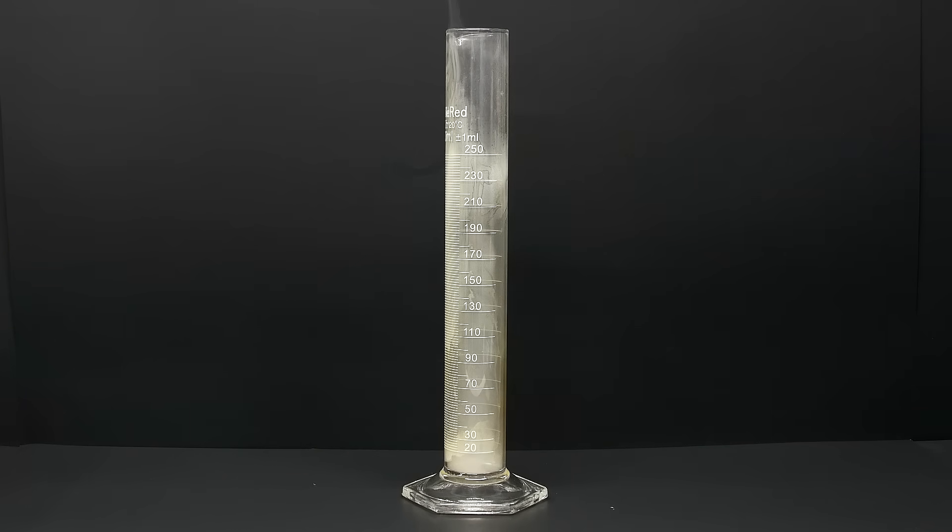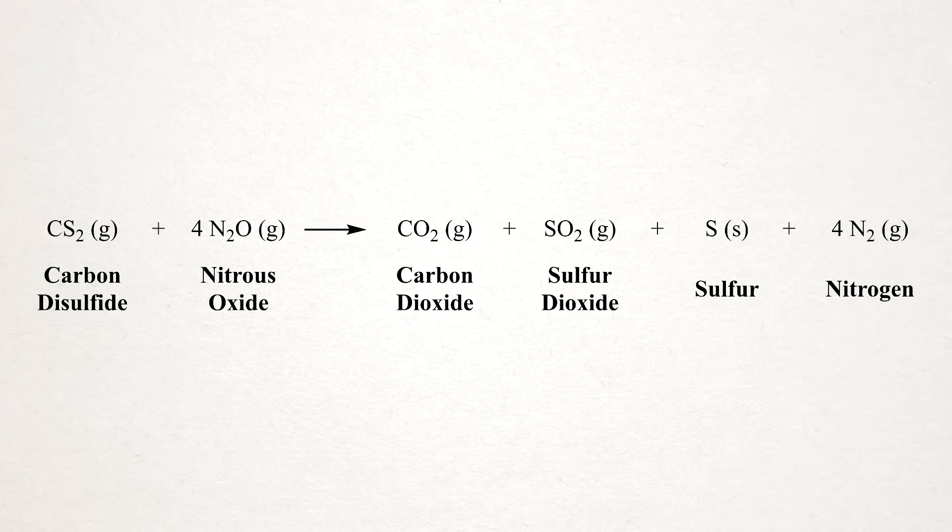When I turn the lights back on, you can see that the grad cylinder is dirty and it's because sulfur has formed on the walls. I couldn't find an amazing reference, but it seems like this is the overall reaction.